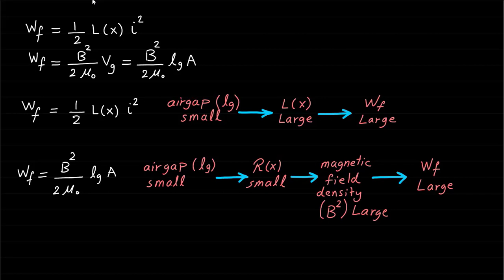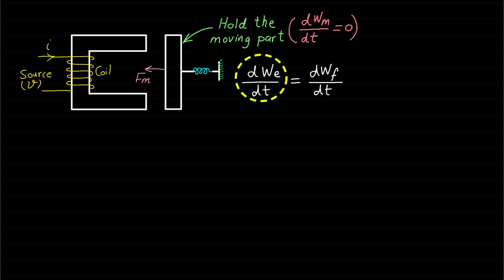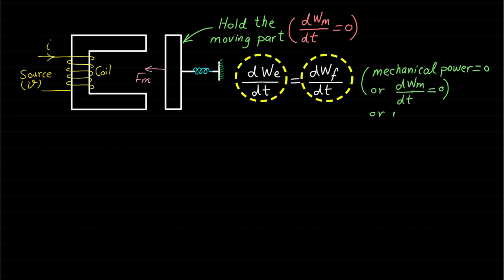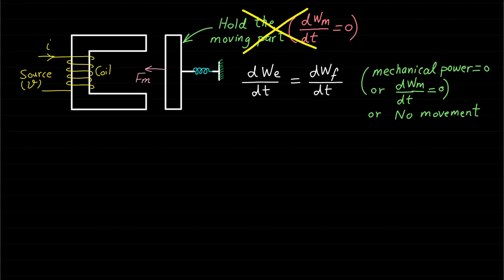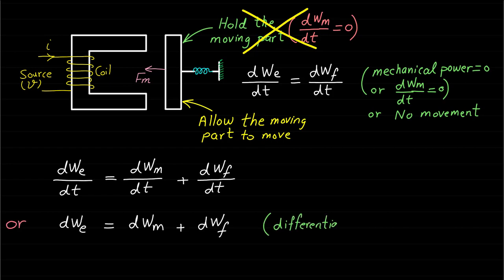It is worth mentioning again that during this lecture we assumed that the mechanical power is zero because we held the moving part. Therefore, all the change of electrical energy will be equal to the field energy — all electrical energy will be converted as field energy. Note that this assumption is just used to identify the field energy formula. However, if we allow the moving part to move, the change in electrical energy will equal the change in mechanical energy plus the change in field energy. In the upcoming lecture, we will use this relationship to identify the formula of mechanical force and torque.